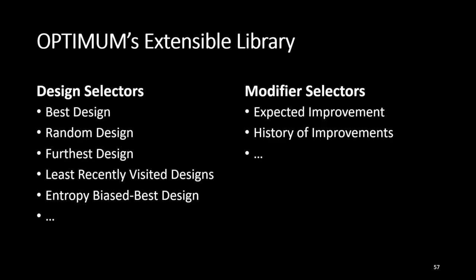For example, we can choose things like the best design that you've discovered or a random design, the furthest design from the one you just looked at. Modifier selectors can look at the expected improvement based off of a modifier in the heuristic map or a history of improvement when adding that modifier.